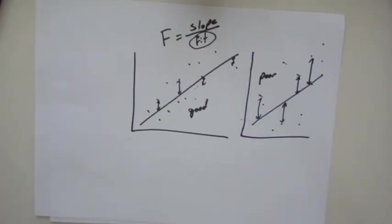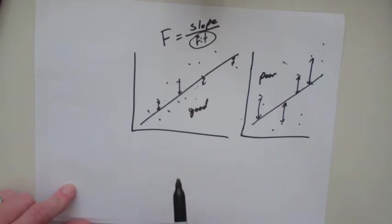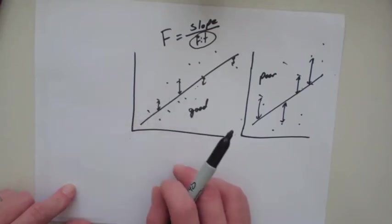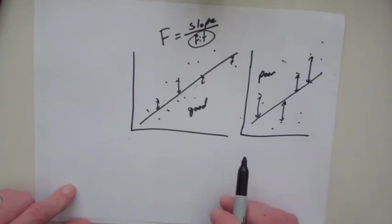Indeed, what you want in a predictive relationship is a relationship where one variable has a strong effect on the dependent variable and has good predictive power. The slope is the magnitude of the relationship between the two variables. The fit is the predictability of the relationship.